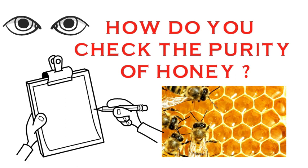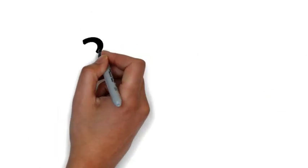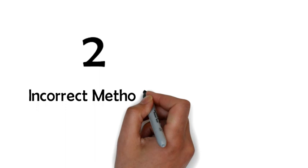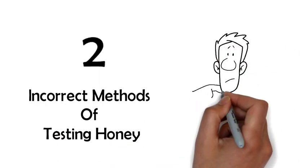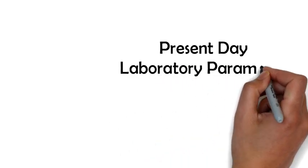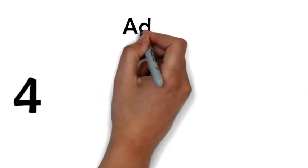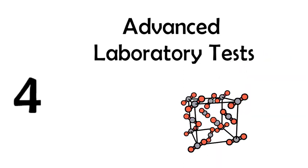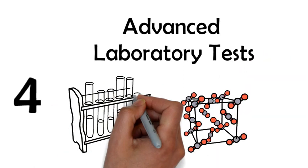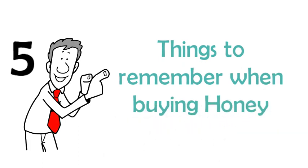This video focuses on 5 topics: Number 1, Different Types of Fake Honey or Adulteration; Number 2, The Wrong, Misleading and Outdated Methods of Testing Honey; Number 3, Present Day Laboratory Parameters Set by Regulatory Authorities; Number 4, Advanced Laboratory Tests which can identify adulterations; Number 5, Things to Remember When Buying Honey.